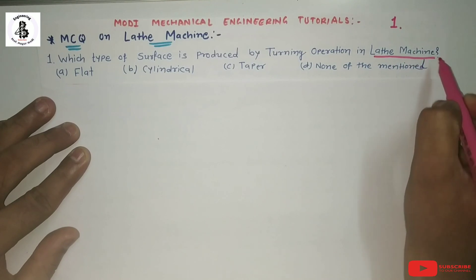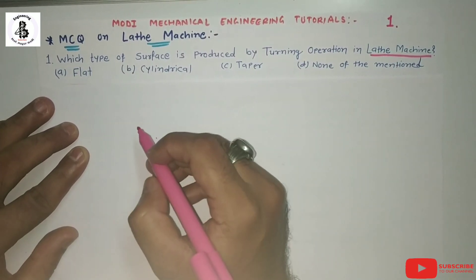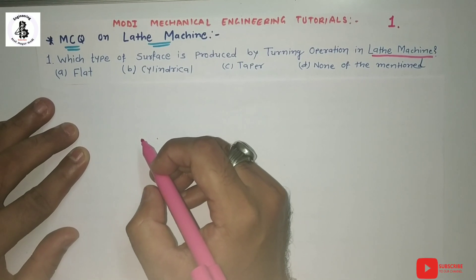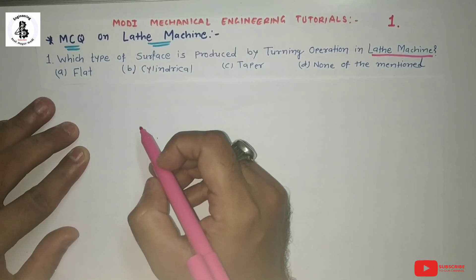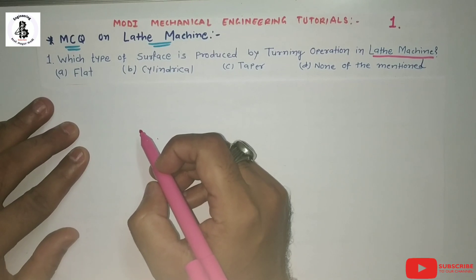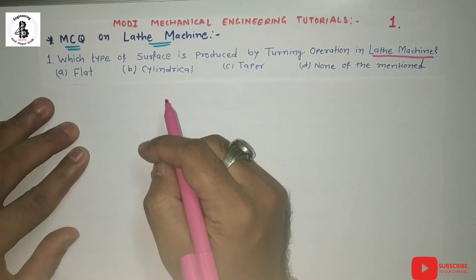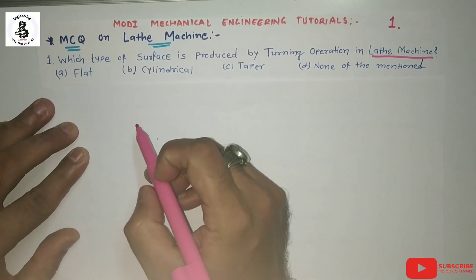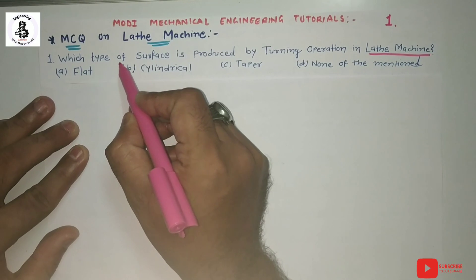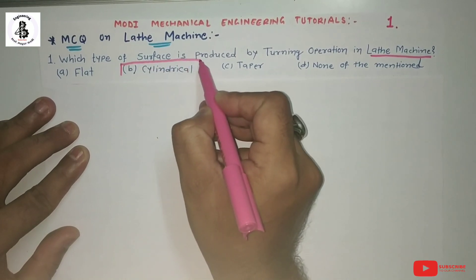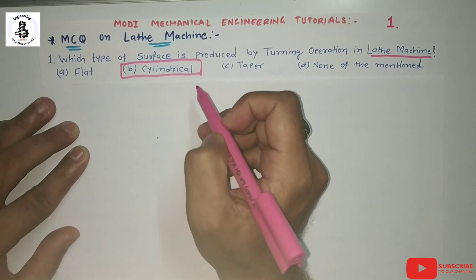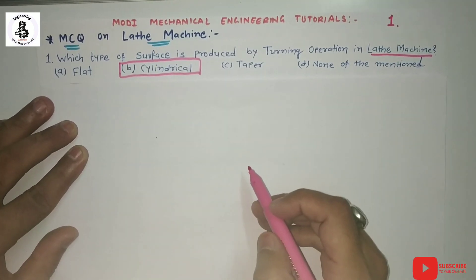If you want to learn in detail about the different kinds of operations carried out on lathe machines, you should find the link in my description. In the case of turning operations on lathe machines, it basically forms cylindrical surfaces. So option B, cylindrical surface, is produced by turning operations on the lathe machine.